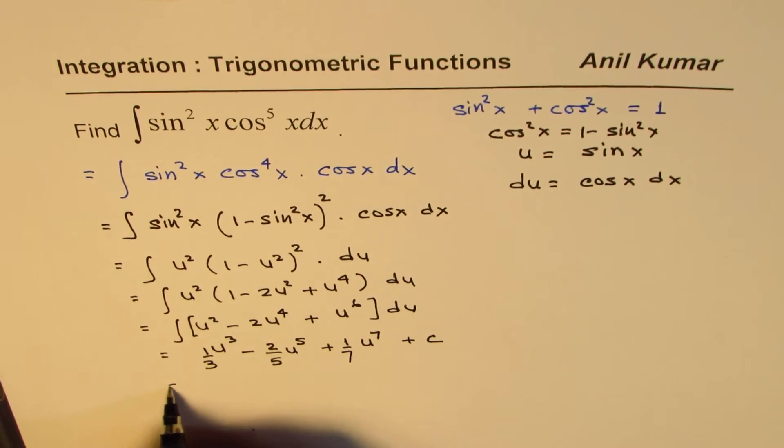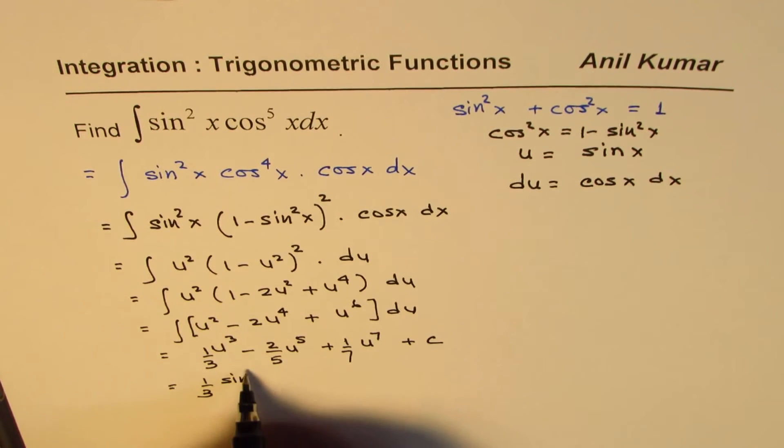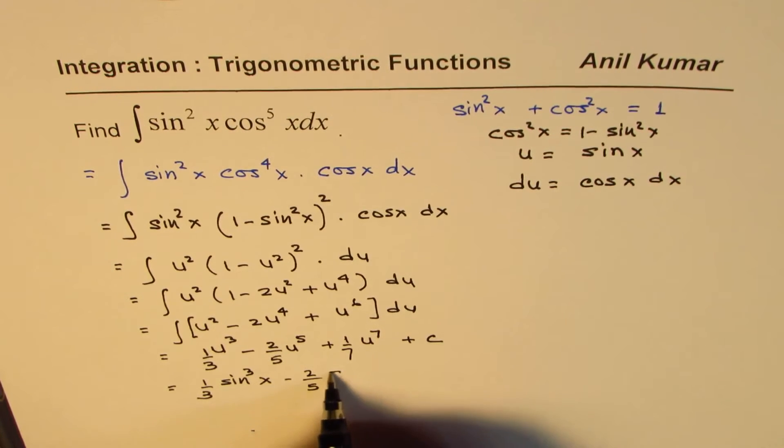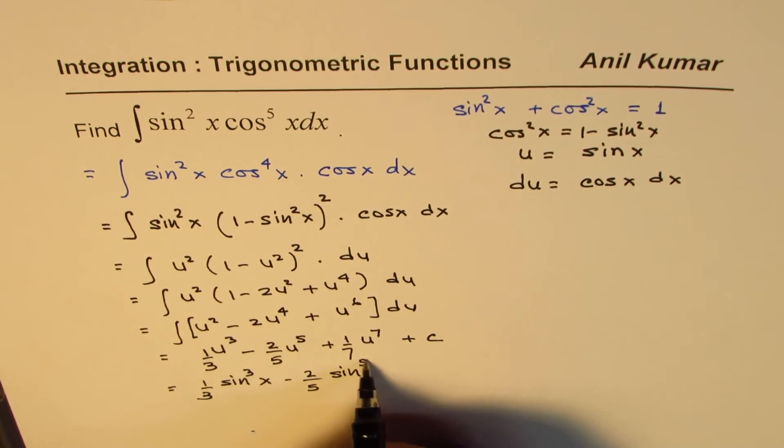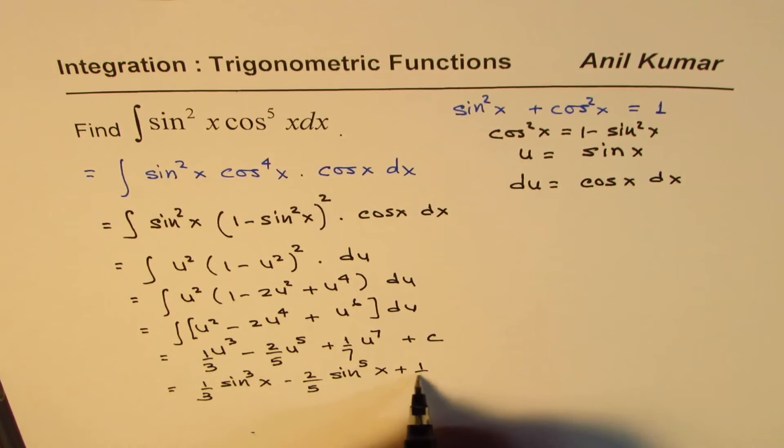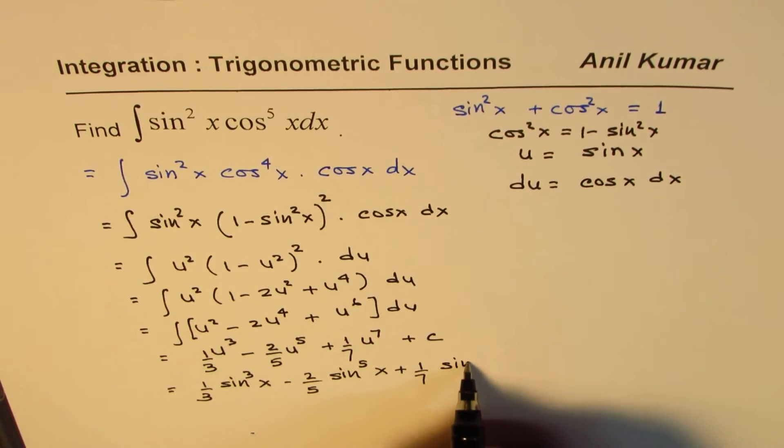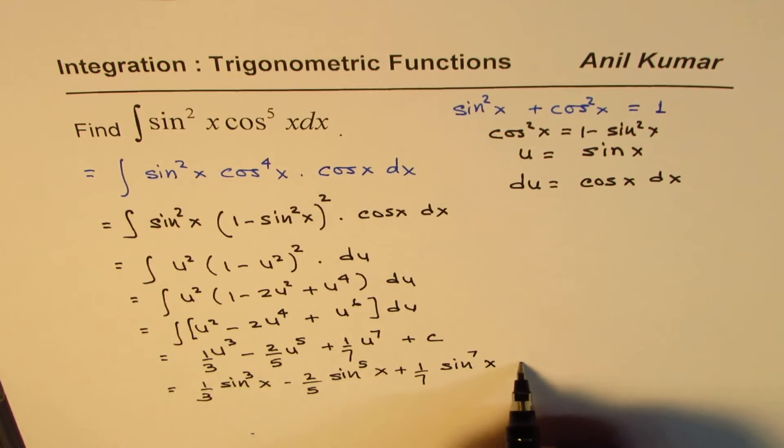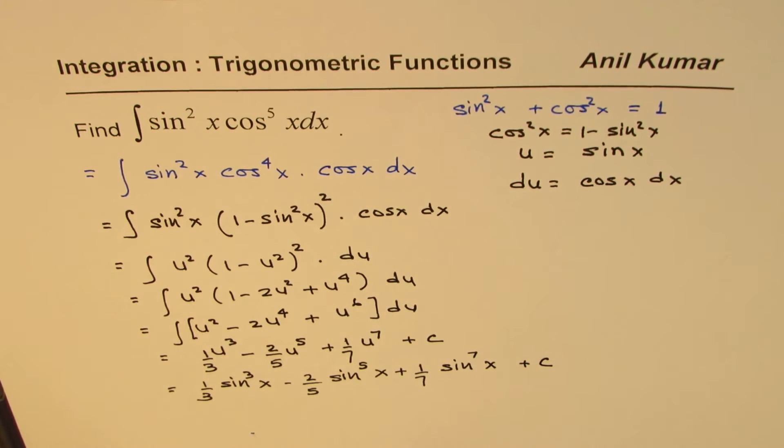Now replace u with sine, so we get 1 third of sine cube x minus 2 fifth of sine to the power of 5x, plus 1 over 7, sine to the power of 7x, plus c. So that is how you are going to solve such a question.